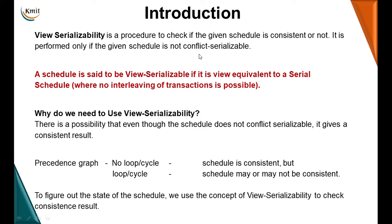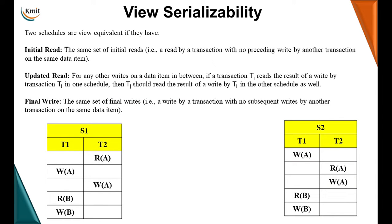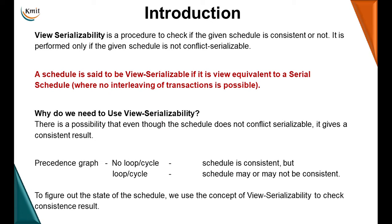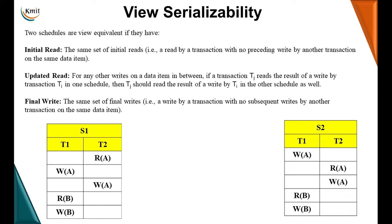A schedule is said to be view serializable if it is view equivalent to a serial schedule — that is, a schedule where no interleaving of transactions is possible. View serializability doesn't bother about the order; it only talks about the final output. It means there is an alternate schedule S' which is view equivalent to the given schedule S.